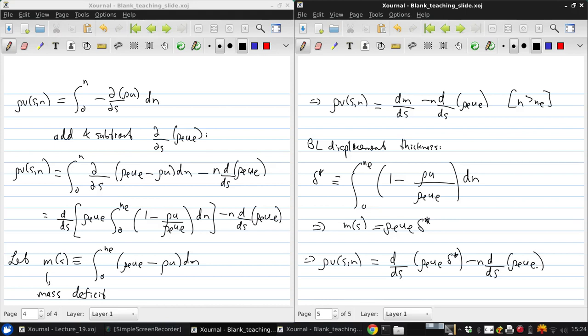Then we can write that ρv of (s,n) is d/ds of (ρ_e u_e δ*) minus n d/ds (ρ_e u_e). So what we end up with is m of s is the mass flow difference between the equivalent inviscid flow and the real flow. And δ of s is the resulting displacement of the equivalent inviscid flow from the wall to get the same mass flux.